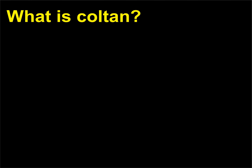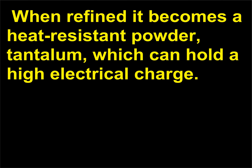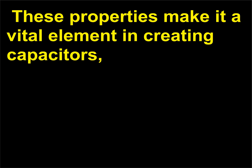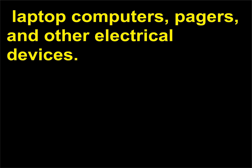What is coltan? Coltan is the shortened name for the metallic ore columbite-tantalite. When refined, it becomes a heat-resistant powder, tantalum, which can hold a high electrical charge. These properties make it a vital element in creating capacitors — the electronic elements that control current flow inside miniature circuit boards. Tantalum capacitors are used in almost all cell phones, laptop computers, pagers, and other electrical devices.